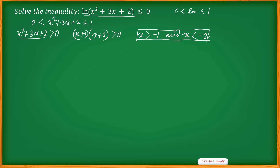The second condition means x² + 3x + 2 ≤ 1, which gives x² + 3x + 1 ≤ 0.